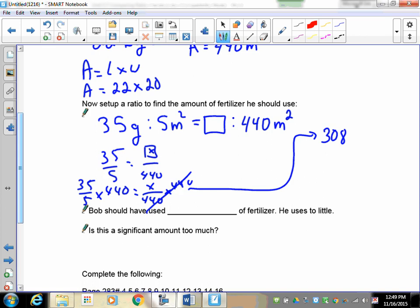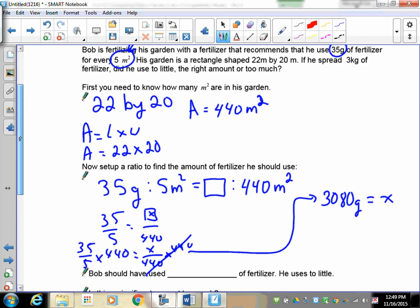3,080 grams, and that is what our x is. Now we take a look at this, you have to be very careful because Bob spread 3 kilograms.